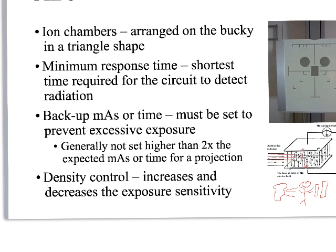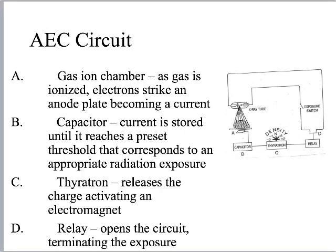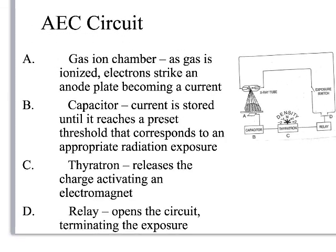Finally, there's a density control. Don't fret the weeds on the density control — you just bump it up or bump it down, depending on if you want to darken the picture. If I have a larger patient, I might bump the density controls up. If I have a thinner patient than normal, I might bump them down. It has a negative one or negative two setting — are you familiar with that on the AEC? If not, I can show you in the lab.